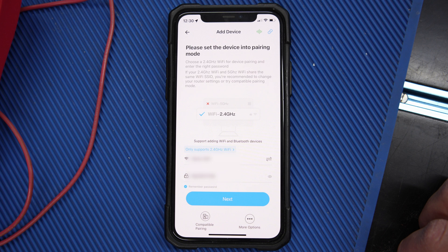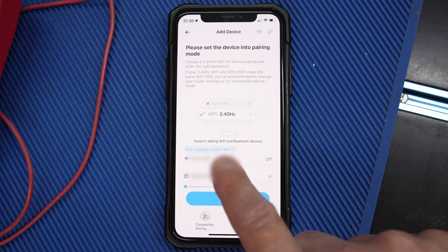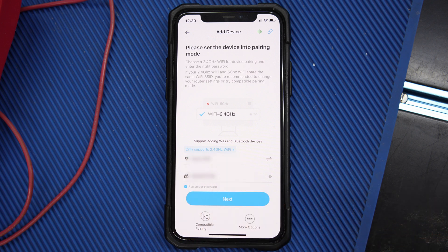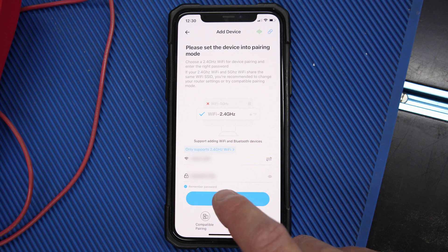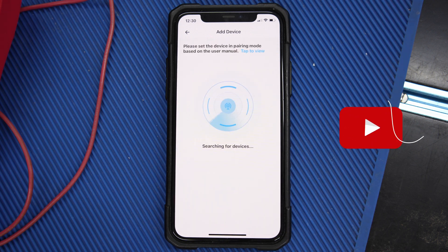One thing to note is that your WiFi and Bluetooth has to be turned on and you have to be connected to a 2.4 gigahertz WiFi connection. The device cannot be connected to a 5 gigahertz WiFi signal. Now enter your WiFi's login details and press next, wait a while until the app picks up your device.